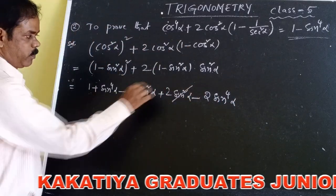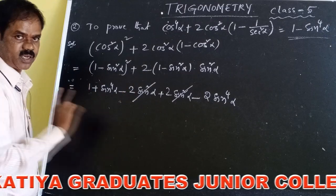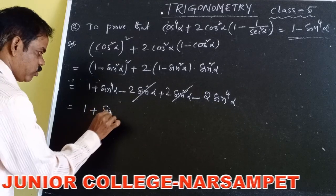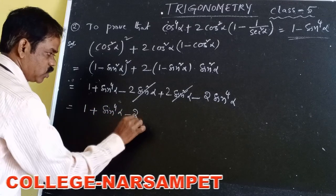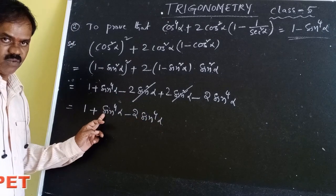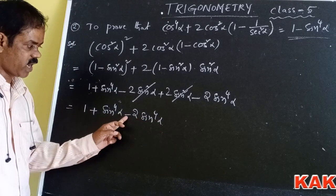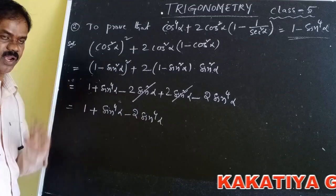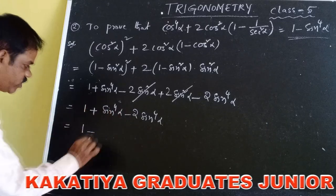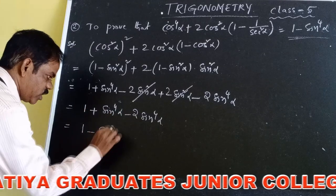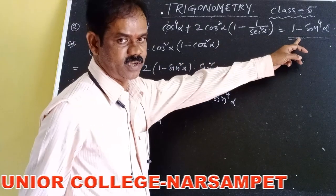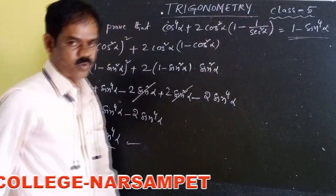Now combining: plus 2sin²α minus 2sin²α — both terms cancel. So it equals 1 + sin⁴α - 2sin⁴α = 1 - sin⁴α. Hence the RHS, 1 - sin⁴α, is proved.